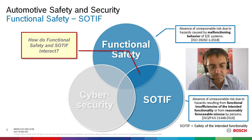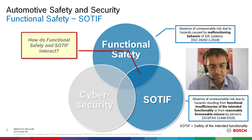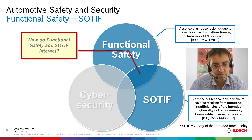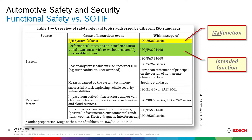The next question is how functional safety and SOTIF interact, how they come together. SOTIF is described in ISO 21448, and within that standard you find a table listing hazardous events and their scope. The EE system failures are addressed by ISO 26262: it addresses a malfunction of a system — the system does something it shouldn't do, or doesn't do something it should. The expected behavior is different from the real behavior.